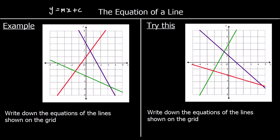Starting with the purple line, we can see it goes across one, down two — across one down two. So it's got a gradient of negative two. For every one it goes across, it goes down two. It crosses the y-axis at three, so its y-intercept is three. That means its equation is y equals minus two x plus three.